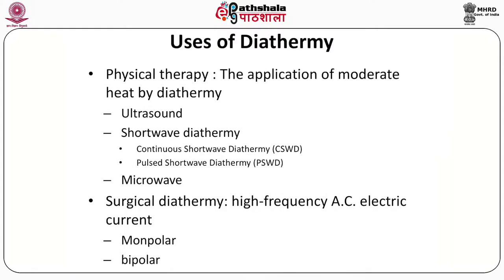Coming to the core topic — the various uses of diathermy. Broadly, there are two uses: physical therapy and surgical diathermy. Physical therapy is the application of moderate heat by diathermy via ultrasound, shortwave diathermy (continuous or pulsed), or microwave. Surgical diathermy is the use of high-frequency alternating current with two modalities: monopolar and bipolar.